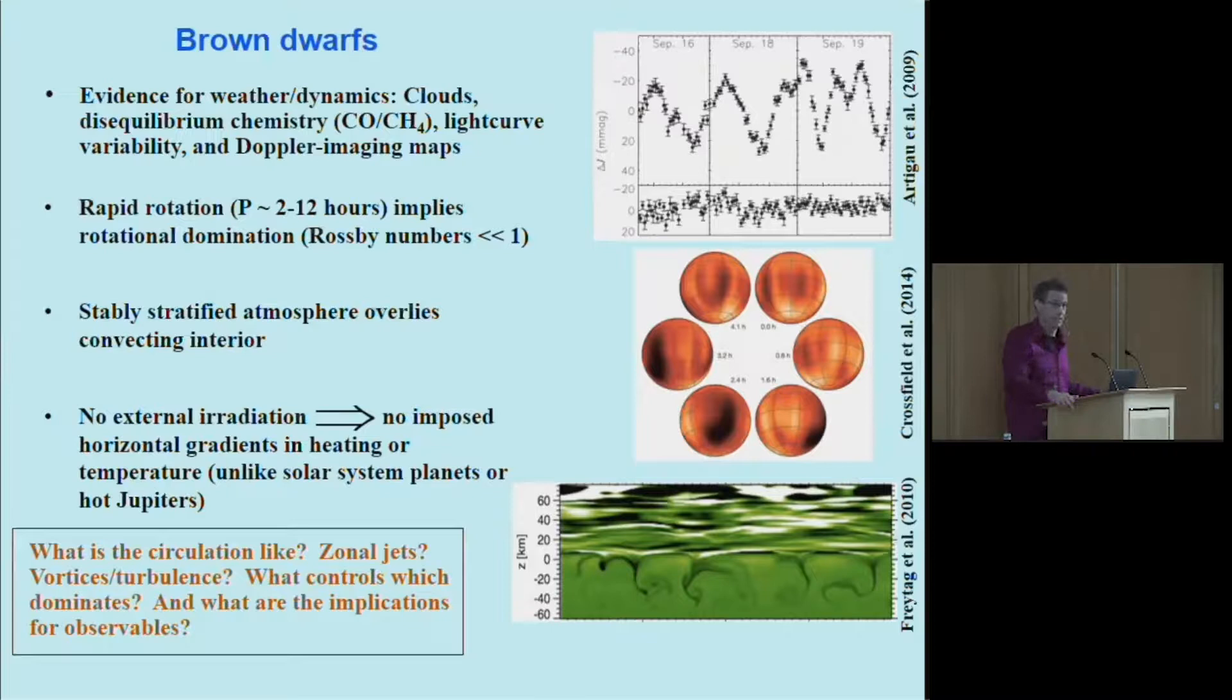The stratified atmosphere has no external baroclinicity, no external gradient from a star because there is no star. But you have this convection pounding against the base of the stratified atmosphere, and that can generate waves, atmospheric waves that can propagate up into the atmosphere. They can break, they can get absorbed, they can interact with each other, and that in principle can drive a circulation. In fact, we have an analogy for this in the solar system in the stratosphere of the Earth and the giant planets, where the circulation in the stratosphere of the Earth is predominantly driven by this same mechanism.